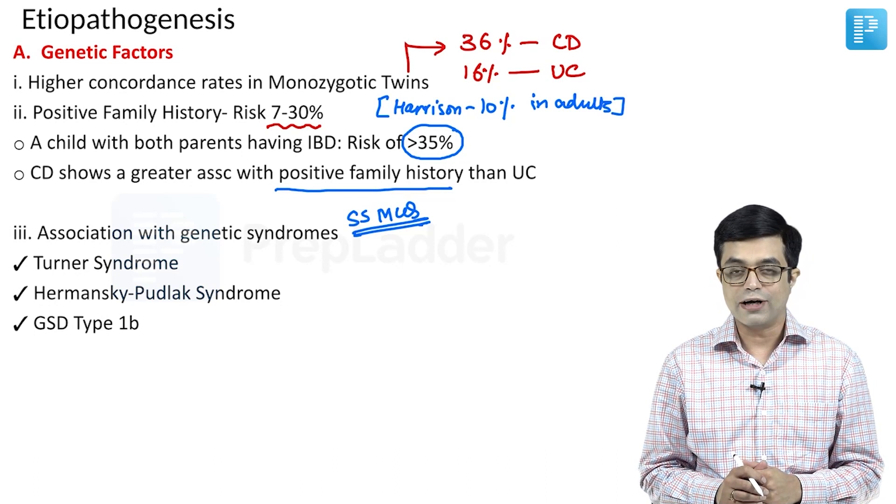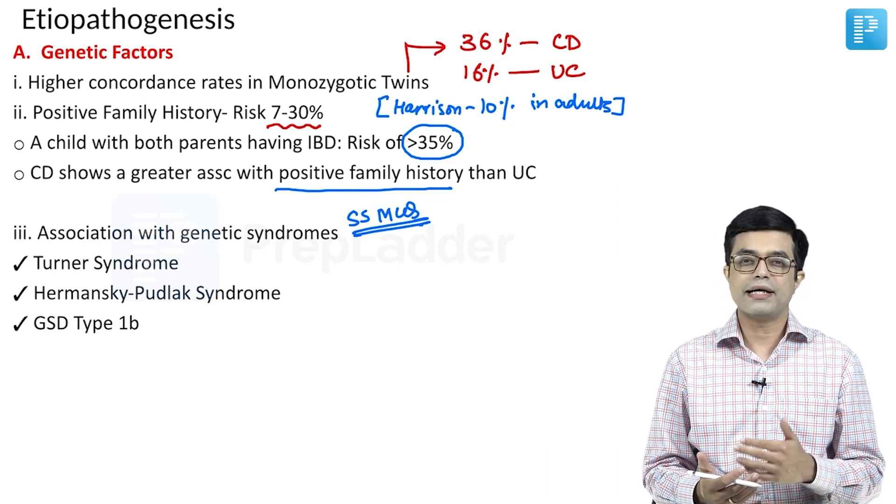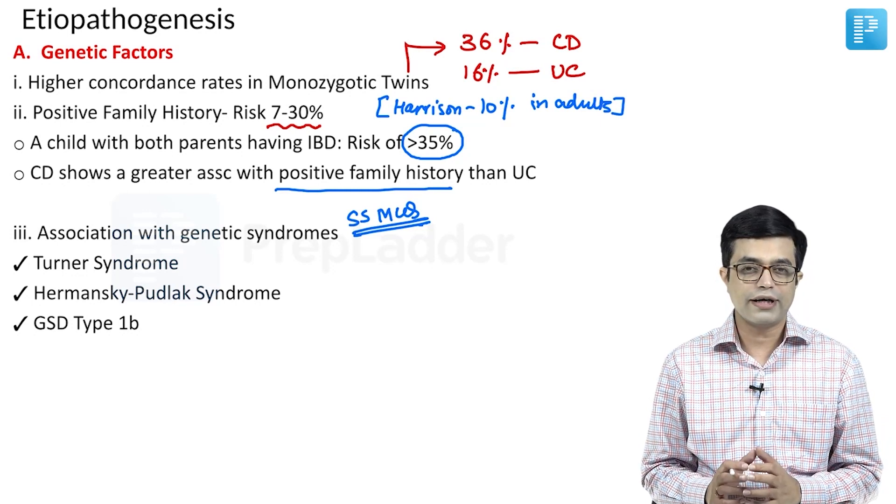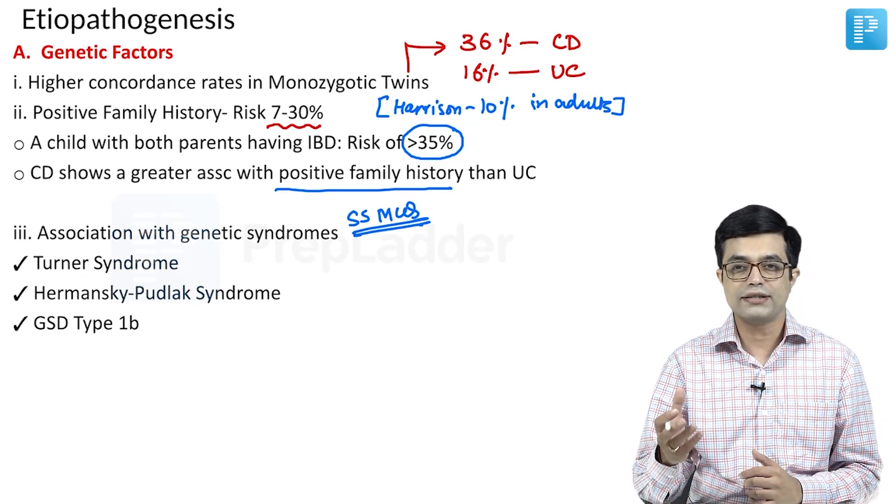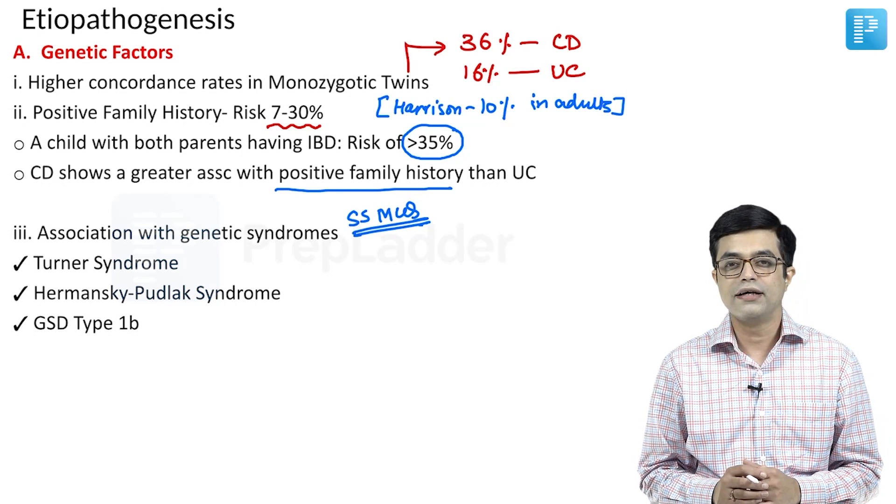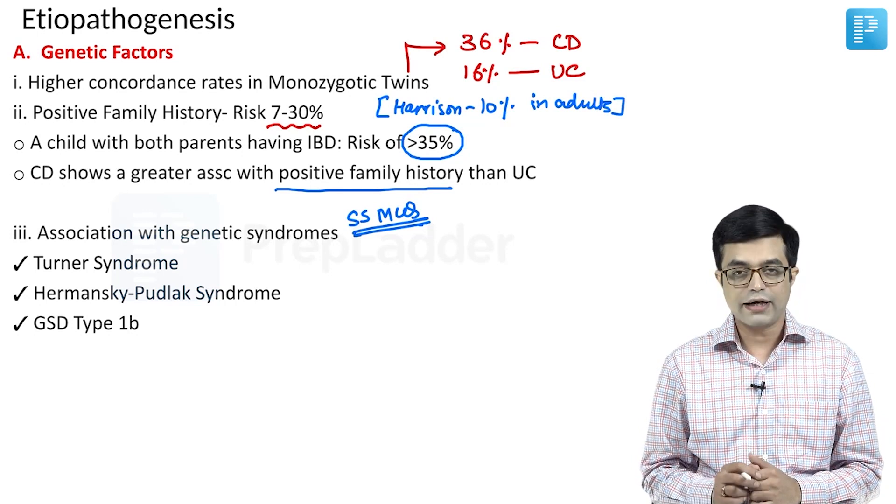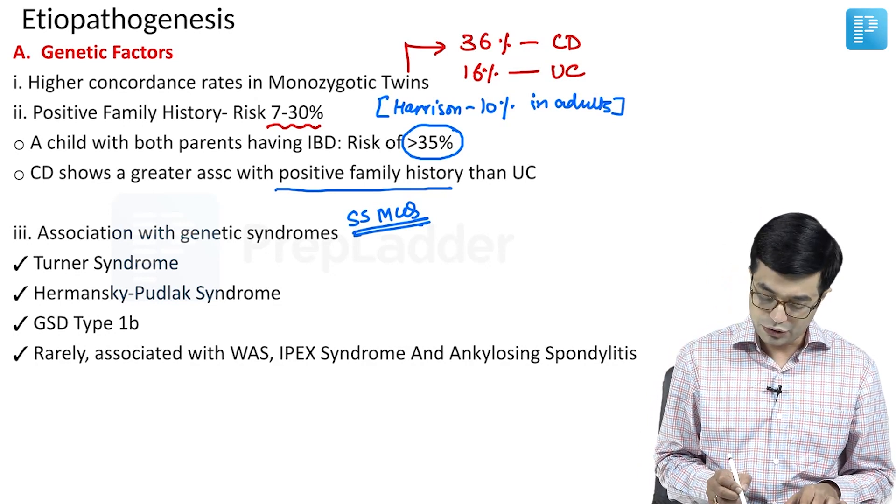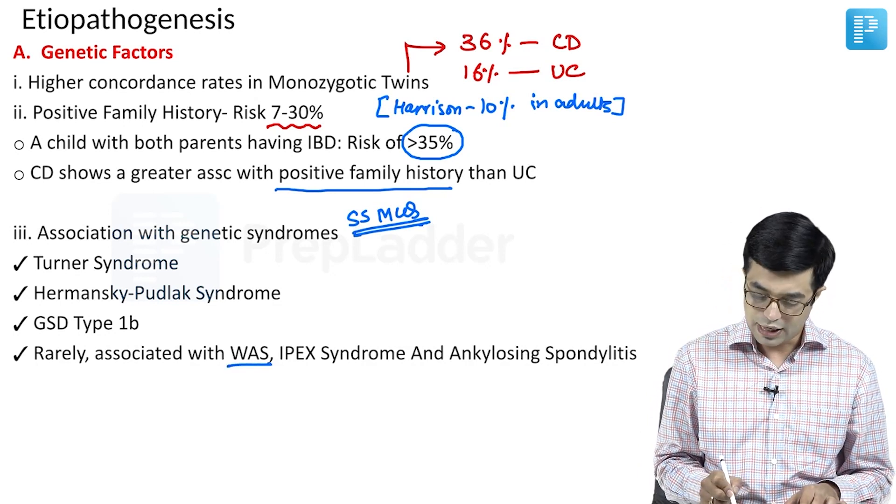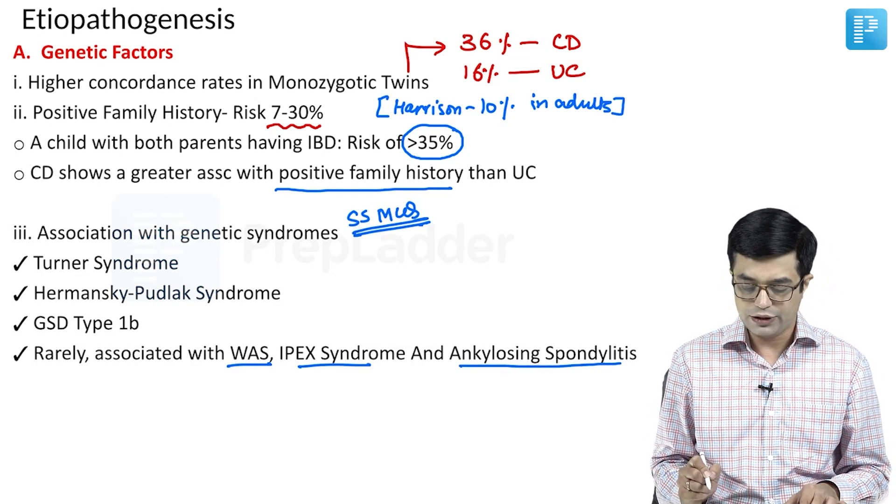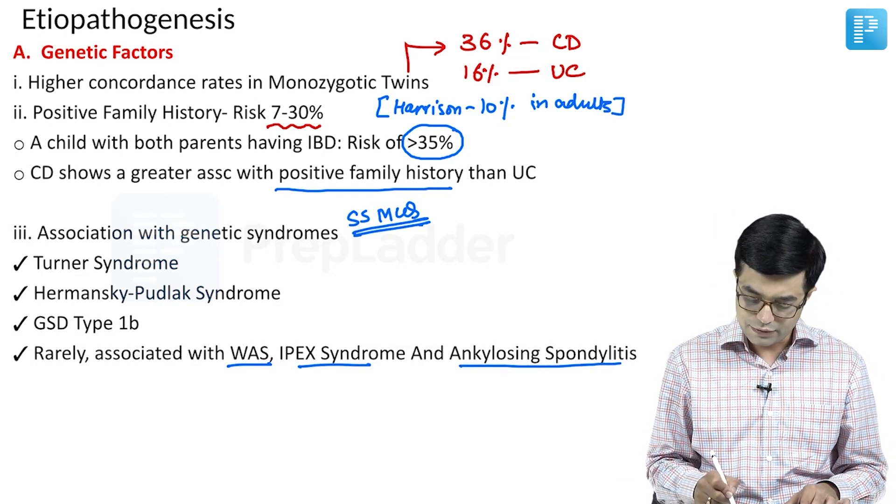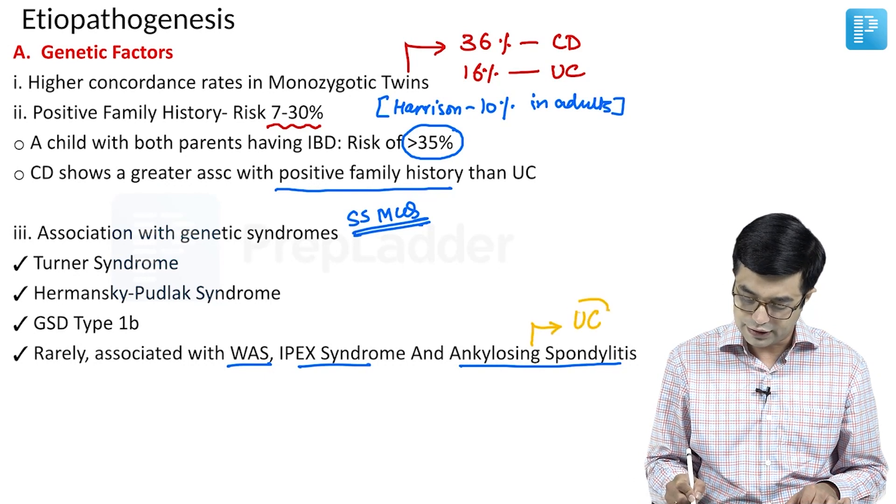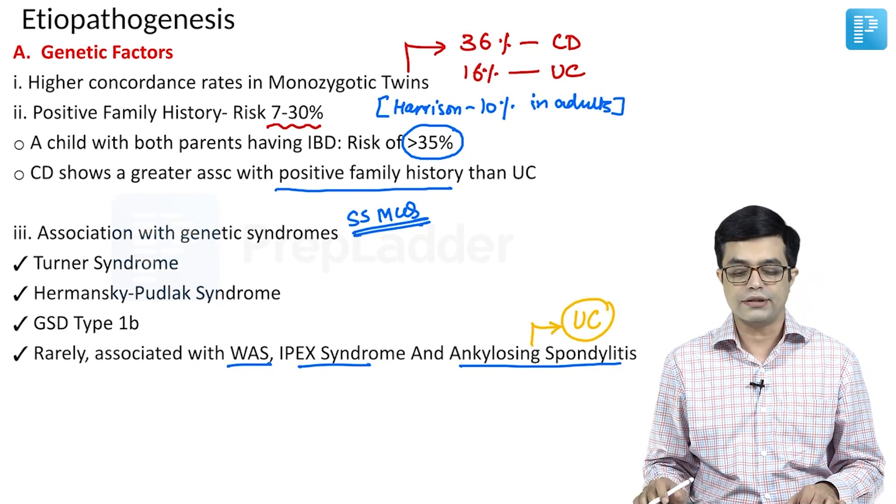Then GSD type 1B. Glycogen storage disease type 1 is the usual Von Gierke disease. There is a variant of it called as 1B in which the translocase, the transporting enzyme is deficient and this is the variety which is associated with high risk of IBD. Rarely this syndrome, these IBDs may be associated with Wiskott-Aldrich syndrome, IPEX syndrome and ankylosing spondylitis. Ankylosing spondylitis association is strongly seen with patients of ulcerative colitis than Crohn's disease.